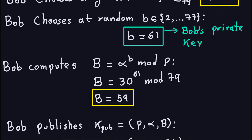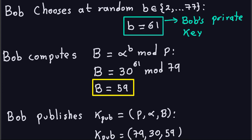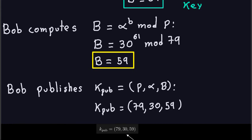Now Bob's job is done in terms of publishing the key. He goes ahead and publishes it on a server or web page. His public key, noted K_pub, is a triple of three numbers: the prime number he chose, the generator, and the result of the modular exponentiation. So in this case, the public key is (79, 30, 59).